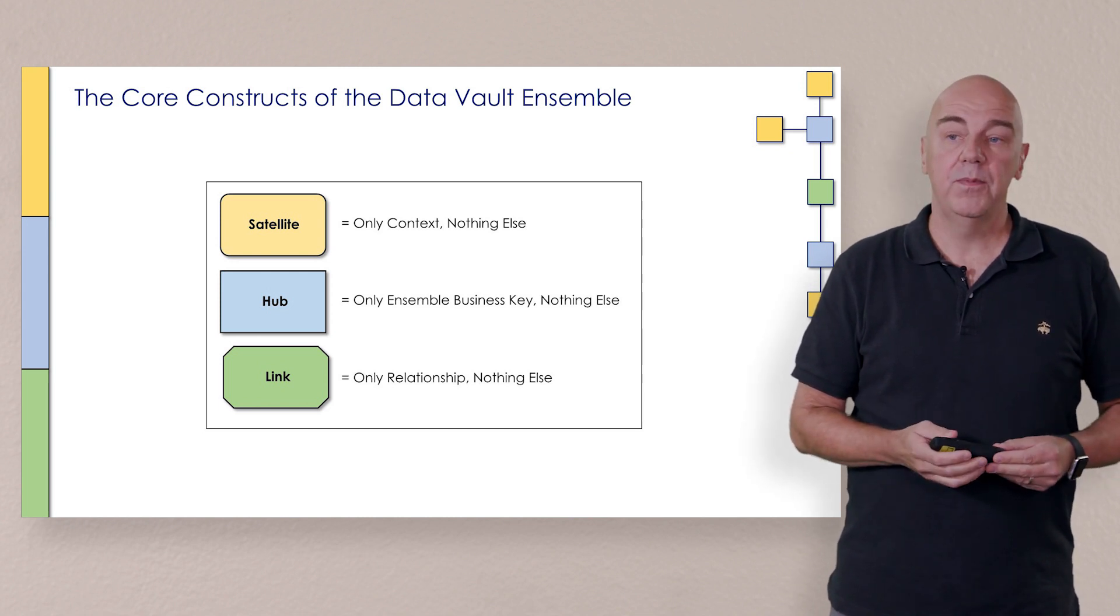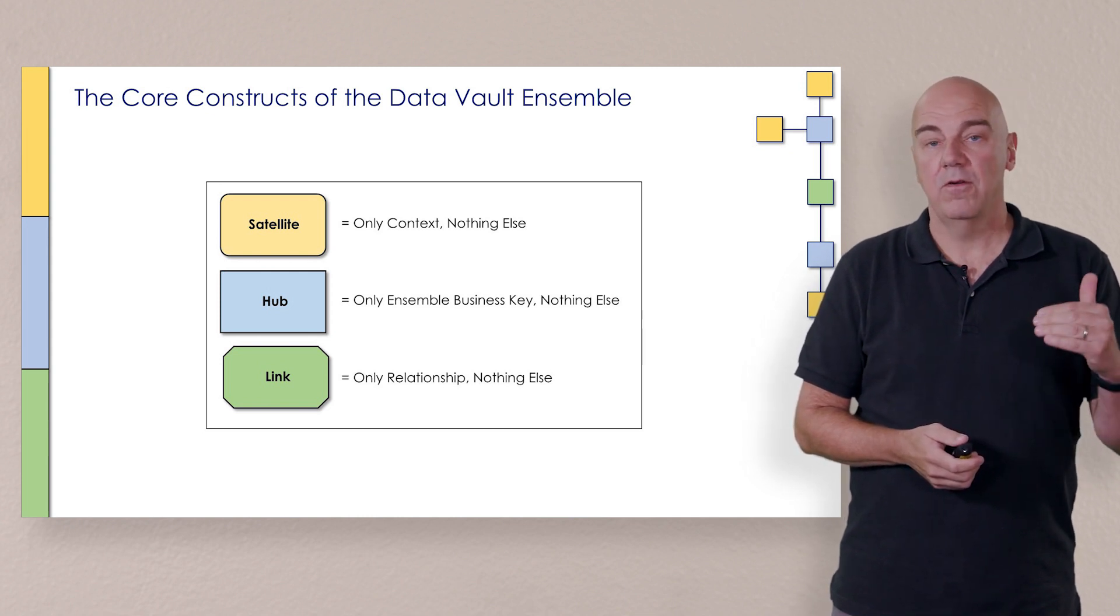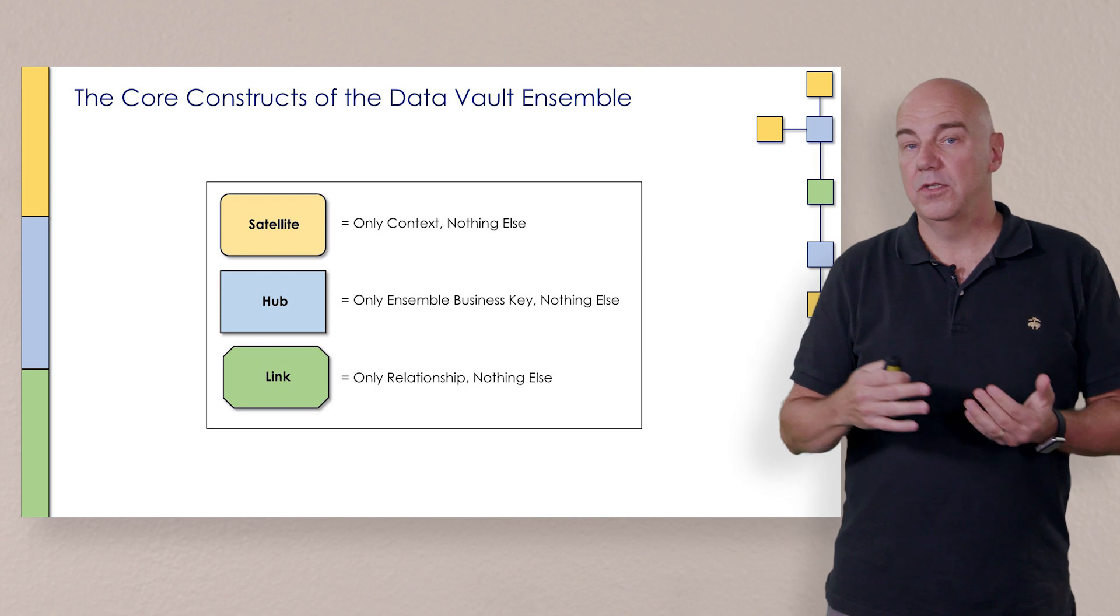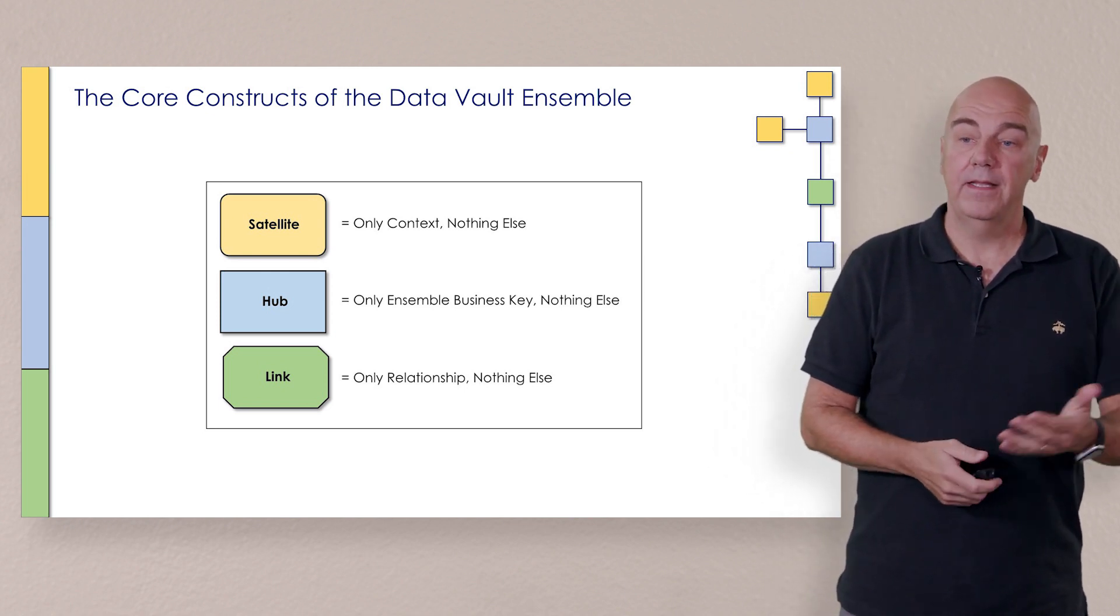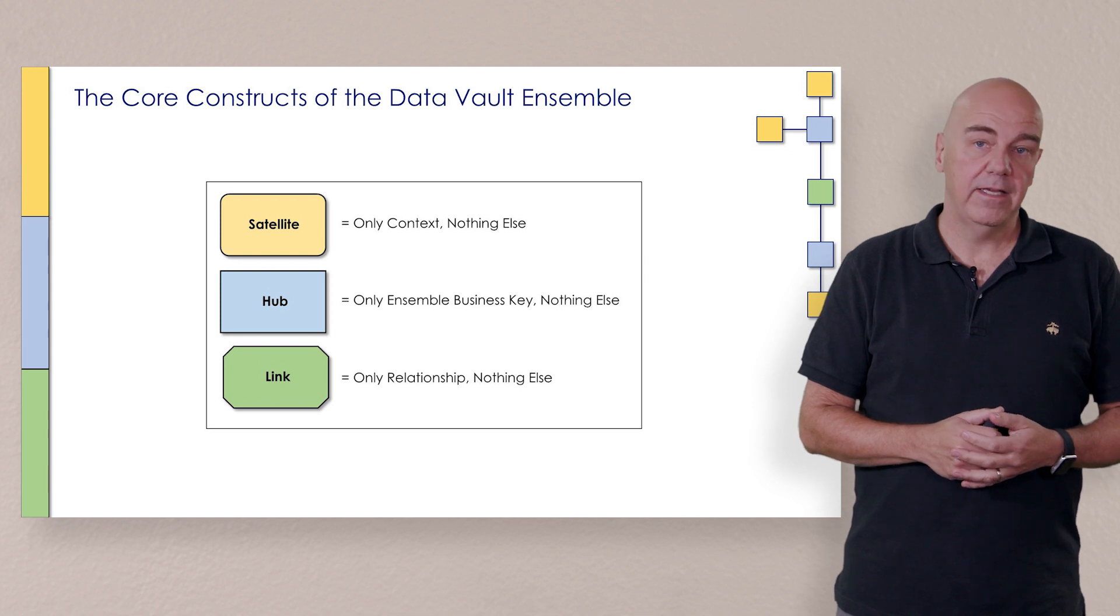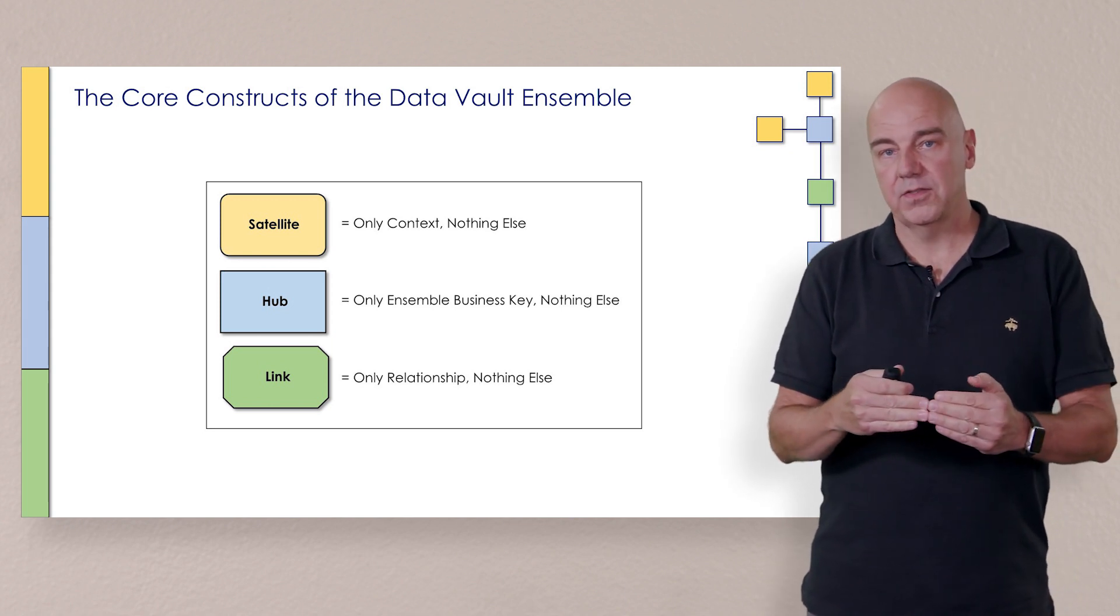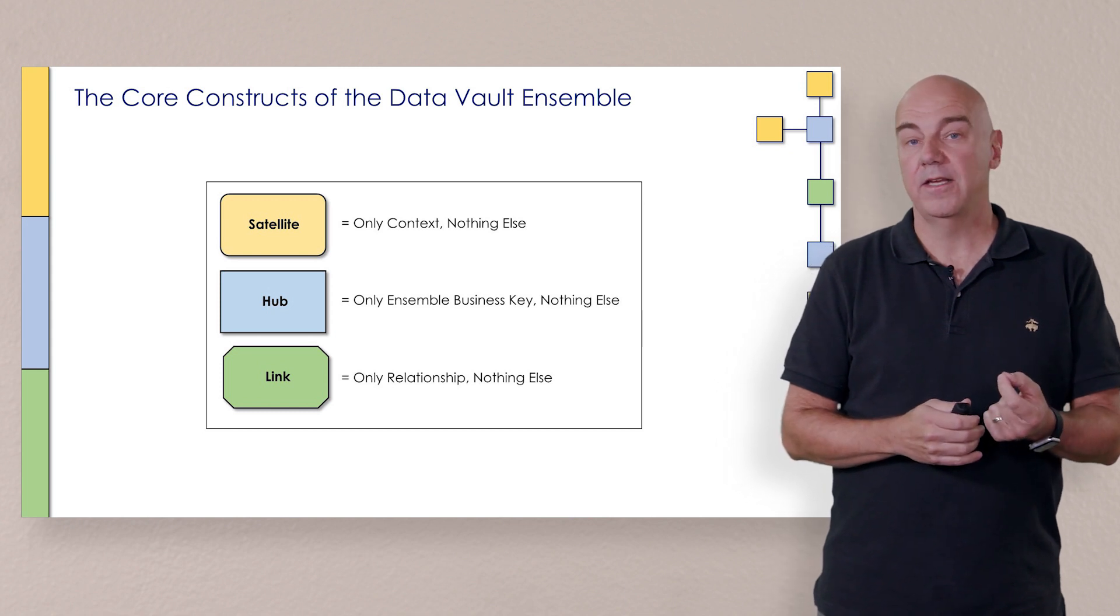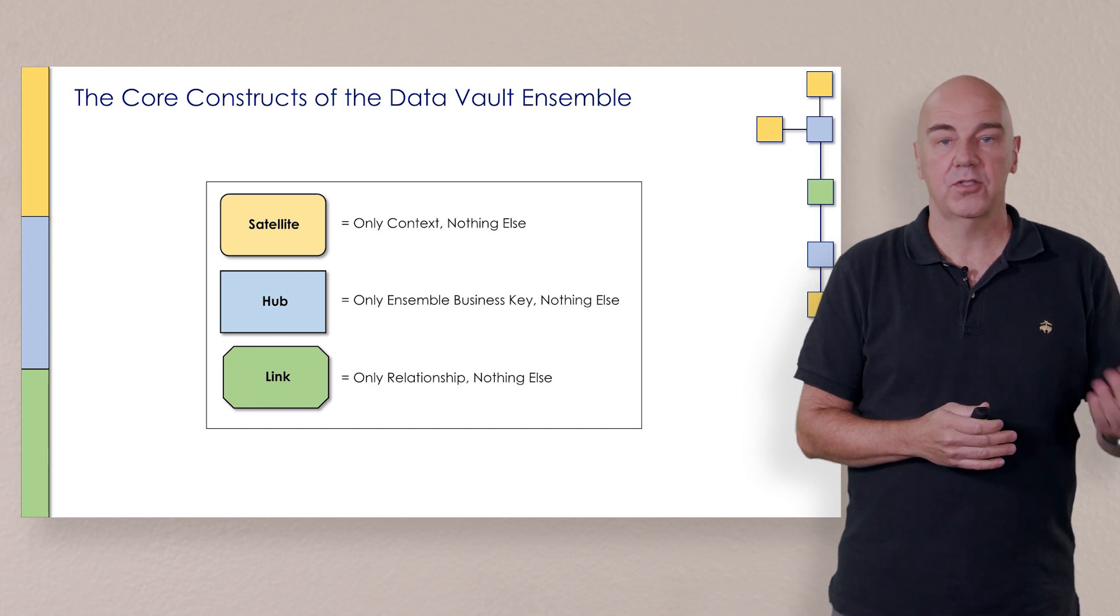The hub represents the ensemble key, the ensemble business key, or the instance of one record, and also nothing else - so no context, no relationships there. And then the relationship, the link, is only the actual relationship but nothing else. So there's no instance key here, there's no meaning to business concept here, and there's no context to describe it.